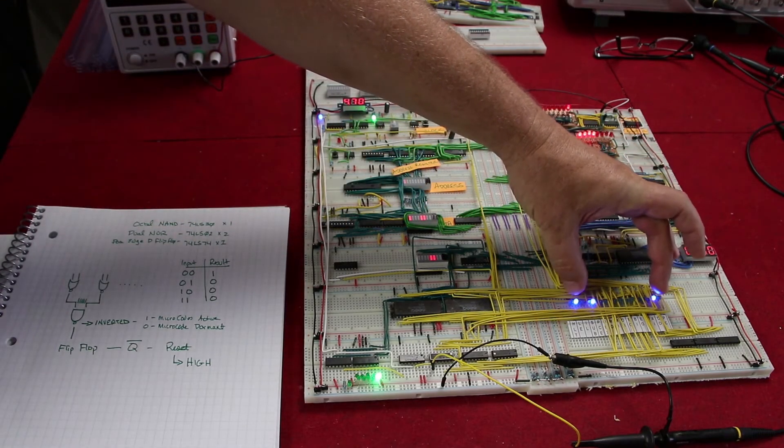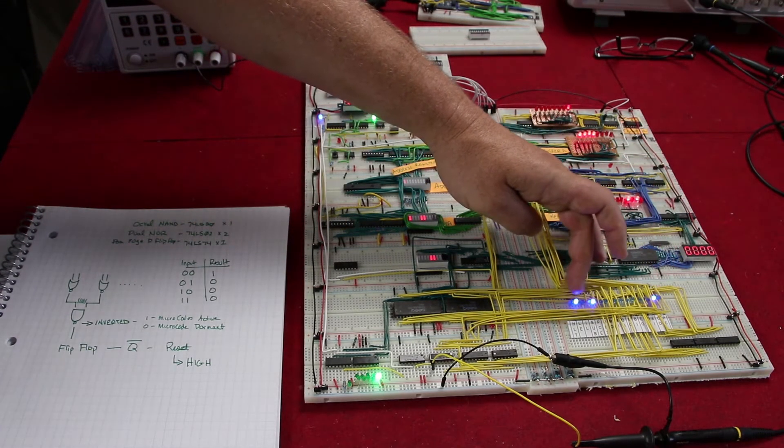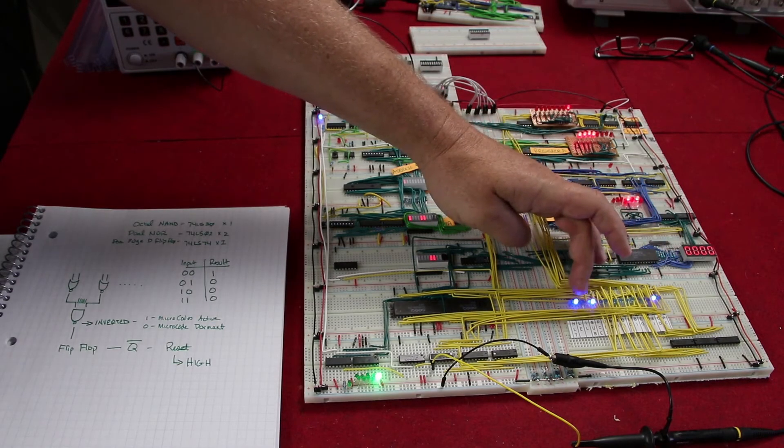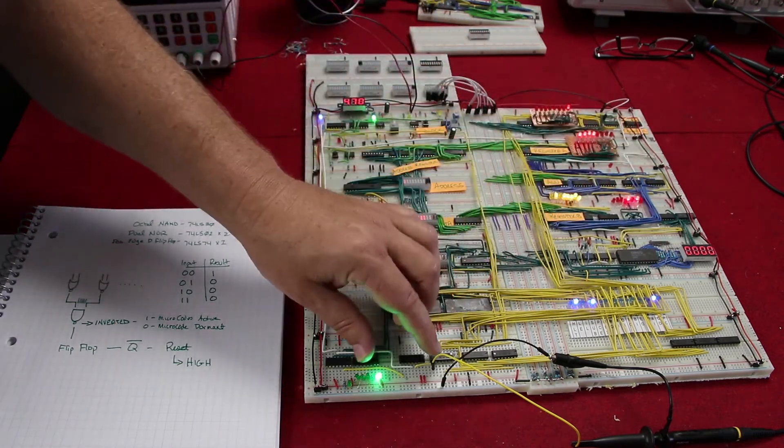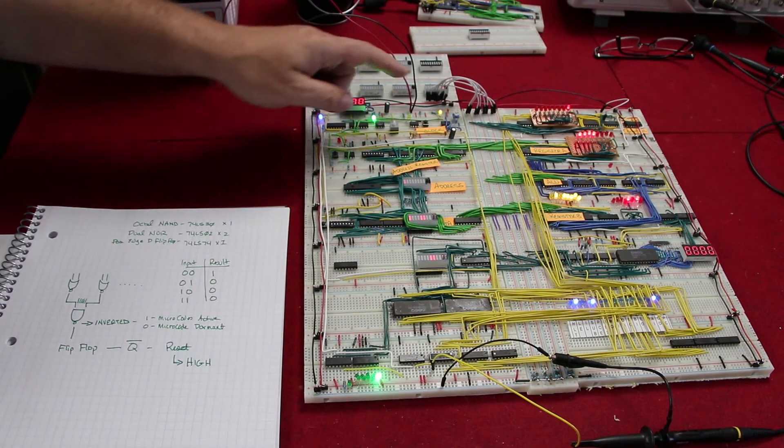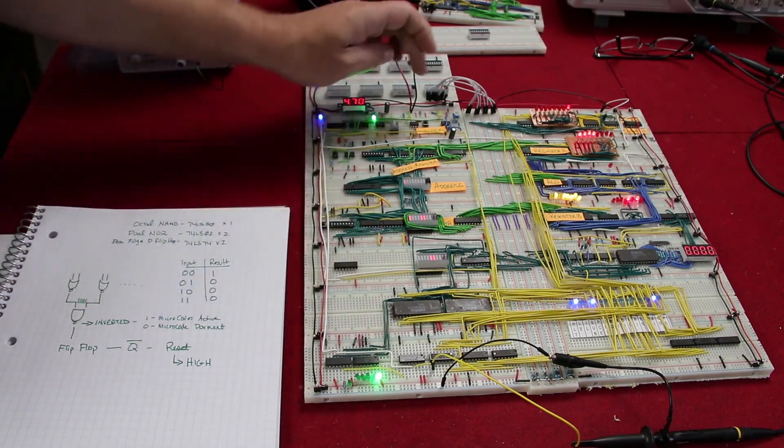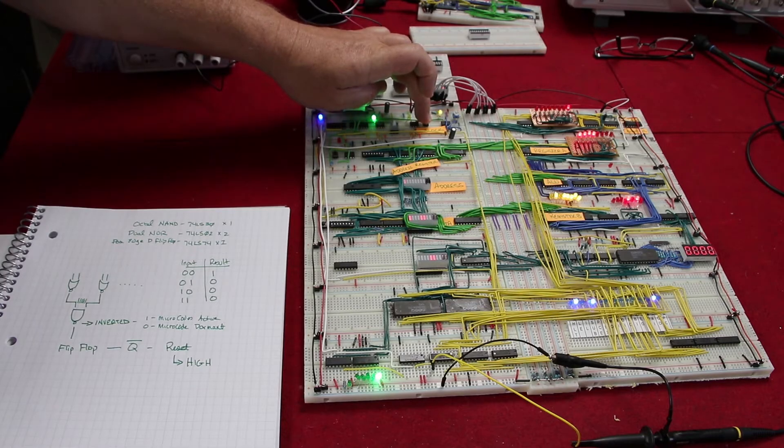In this case, what we have here is we have some microcodes on the microcode register here indicating that we're actively doing something, and something is happening with our instruction set. So we don't want to reset this. We want it to count, and indeed, if I go ahead and clock...